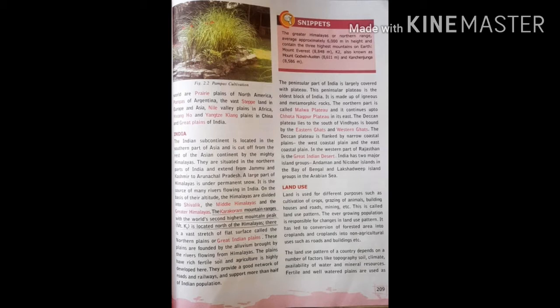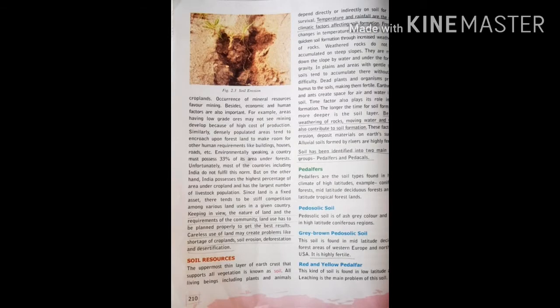The land use pattern of a country depends on factors like topography, soil, climate, availability of water and mineral resources. Keeping in view the nature of land and requirements of the community, land use has to be planned properly to get the best results. Careless use of land may create problems like shortage of croplands, soil erosion, deforestation and desertification.